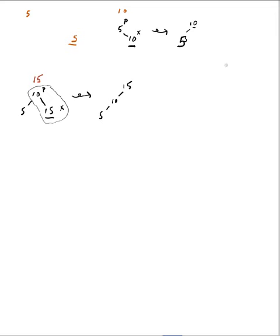Next element I insert will be 3. Here's my tree: 15, 10, 5, and I insert the 3. So here is my X, here is the parent, and here is the grandparent. I see I have the zig-zig configuration. With the zig-zig configuration, first I rotate around this link and then I rotate around this link. Doing that, I get my X here, my P here, and my G pushed down.